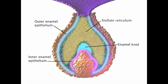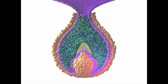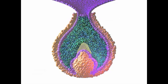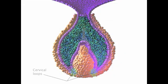The tooth has now entered the bell stage of development. Development of these structures is paired with the formation of cervical loops, points where cells continue to divide until the crown of the tooth is at its full size.